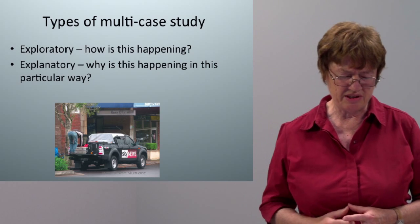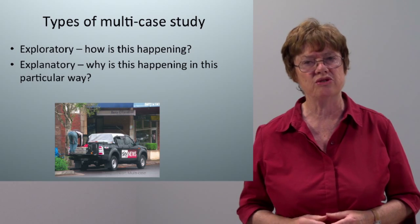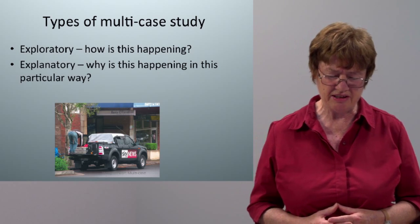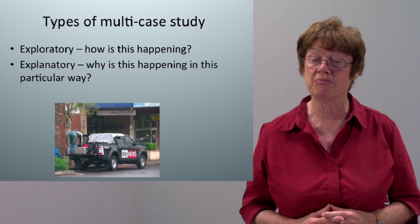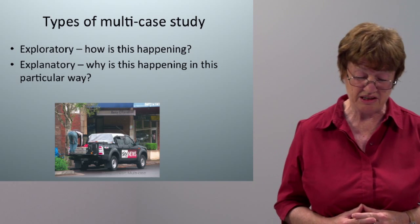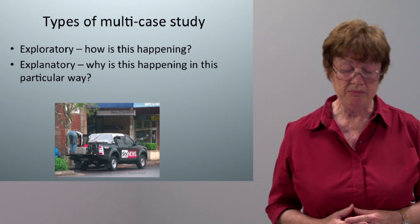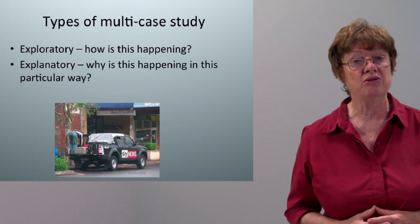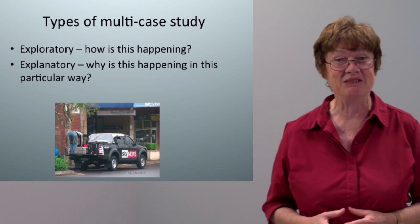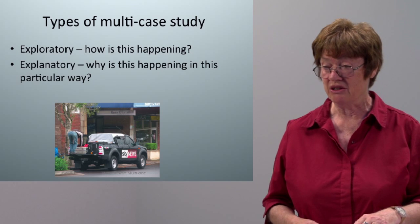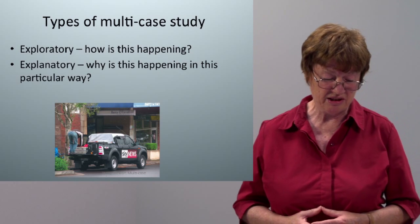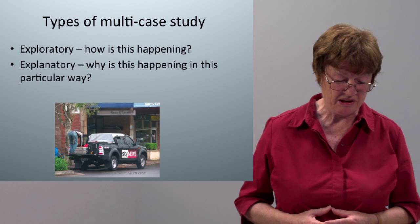The next category is explanatory — we're going up a step here. This is more difficult because we're asking the why question, which is usually tougher than the how question. But you can get some penetrating results. An example of the explanatory use of multi-case studies is O'Neill's study of e-governance. It enabled this researcher to actually question the notion, quite widely spread, that e-governance was transformative. When she actually looked at the impact of e-governance she found that that wasn't actually the case, and she used the multi-case approach to figure out both how and why that was happening.